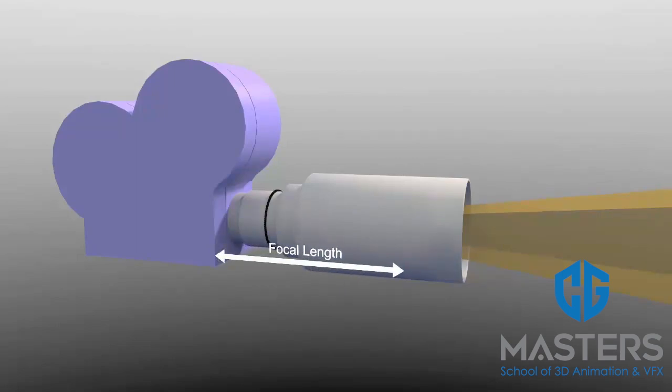They are called long lenses because the focal length is comparatively long. For example, a telephoto lens may be as long as 200mm, 400mm, or even more.